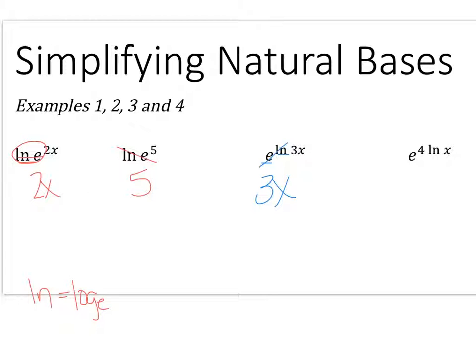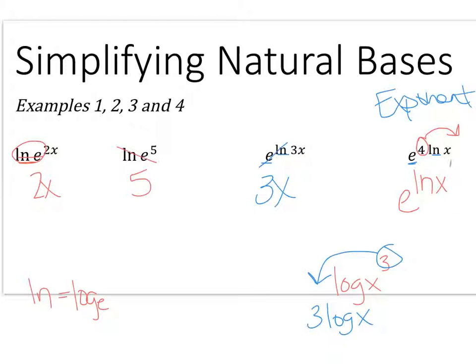This problem here is slightly different. My issue here is that the e and the natural log aren't touching each other so I can't really use inverses yet and say they cancel out. So we're actually going to take one of our properties we already know and use it in reverse. My issue is that I have this 4 blocking in between e and the natural log. So I'm going to take it and put it back inside the natural log and write it as an exponent. So I have e to the natural log of x to the fourth and now I have my e and my natural log right next to each other so that cancels and this just simplifies down to x to the fourth power.